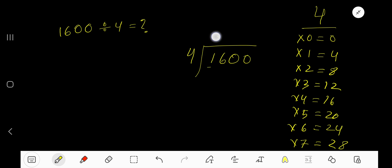4 goes into 1 how many times? 0 times, as 1 is less than 4. 0 times 4 is 0. Subtract, bring down next digit. 4 goes into 16 how many times? 4 goes into 16 four times. 4 times 4 is 16. Subtract 0, bring down this 0.